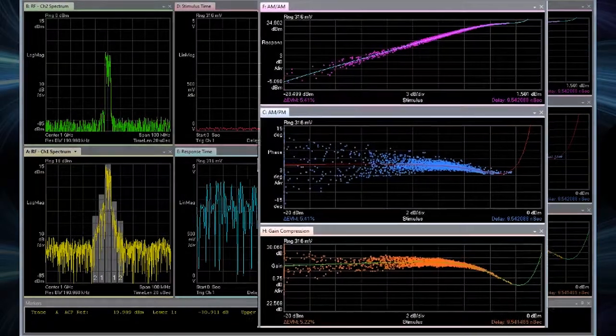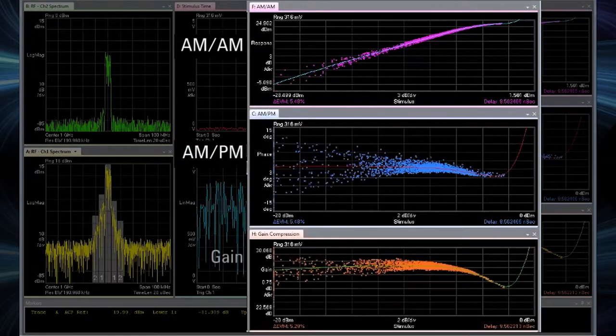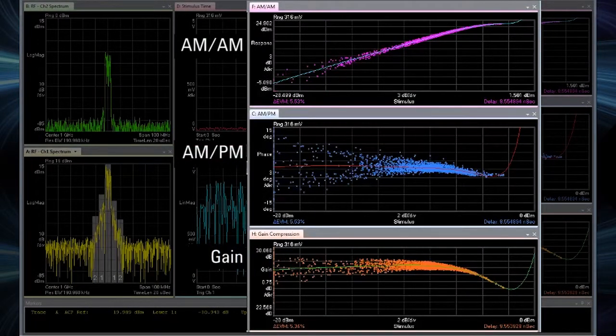We can also characterize distortion with measurements like AM to AM, AM to PM, and gain compression to understand the overall performance of the power amplifier.